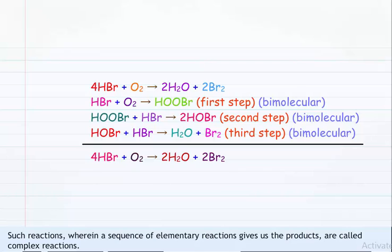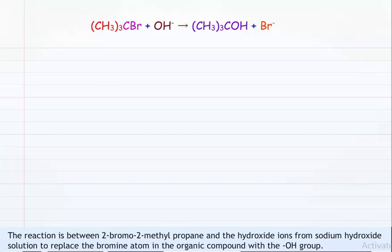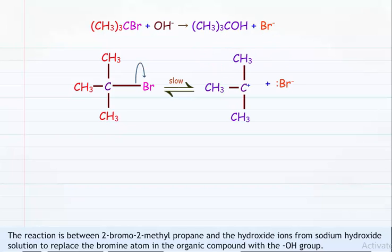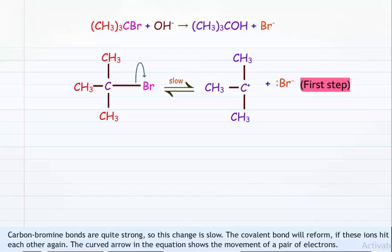Such reactions, wherein a sequence of elementary reactions gives the final products, are called complex reactions. Let us take another complex reaction: the reaction between 2-bromo-2-methylpropane and hydroxide ions from sodium hydroxide solution, replacing the bromine atom with an OH group. In the first step, the carbon-bromine bond in a small proportion of the organic compound breaks to give ions. The carbon-bromine bonds are quite strong, so this change is slow, as the covalent bond reforms if these ions hit each other again. The curved arrow in the equation shows movement of a pair of electrons.